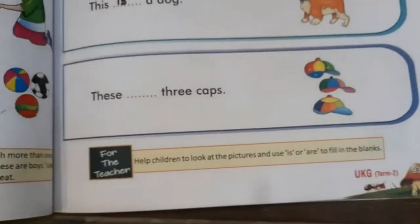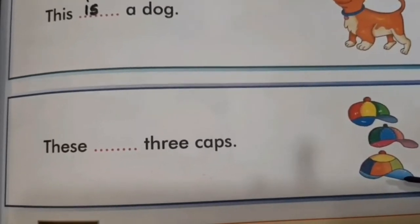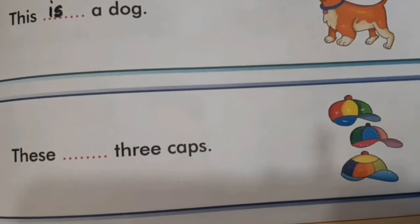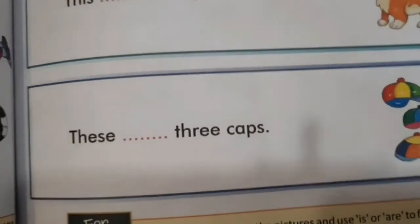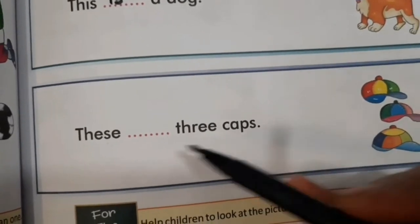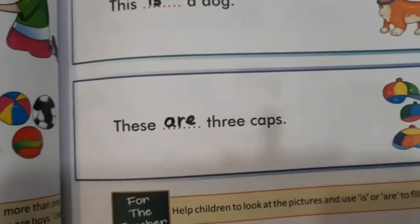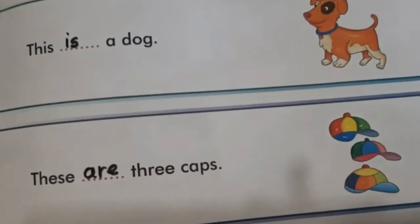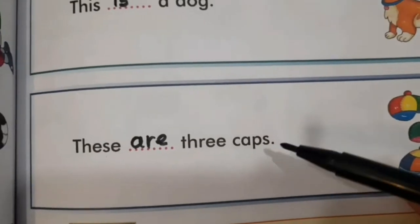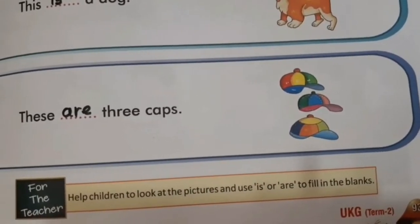Similarly, yehaan peh kitne caps hain? One, two and three. Kitnay caps hain? Three caps. Kitne colorful caps hain? Toh yeh toh three hain, one se zyada ho gaye. Toh yehaan peh 'These ___ three caps.' Yehaan peh 'are' aayega. These are three caps. 'Are' hum ne kyun use kiya? Kyunki yehaan peh zyada caps hain, one se zyada.